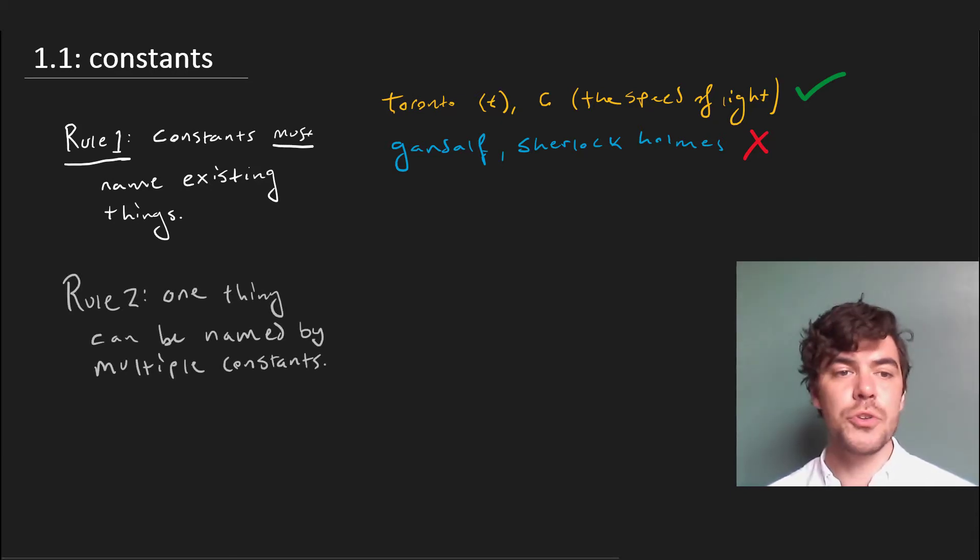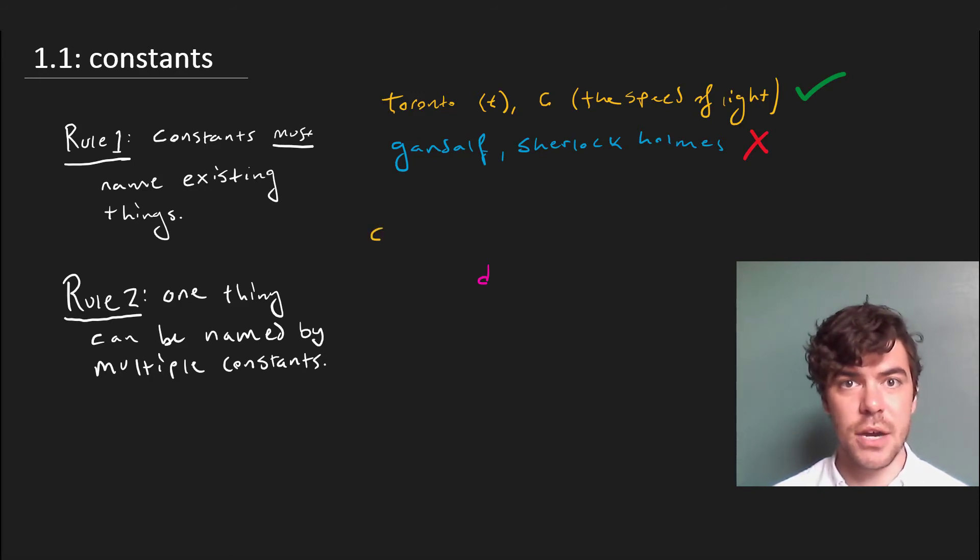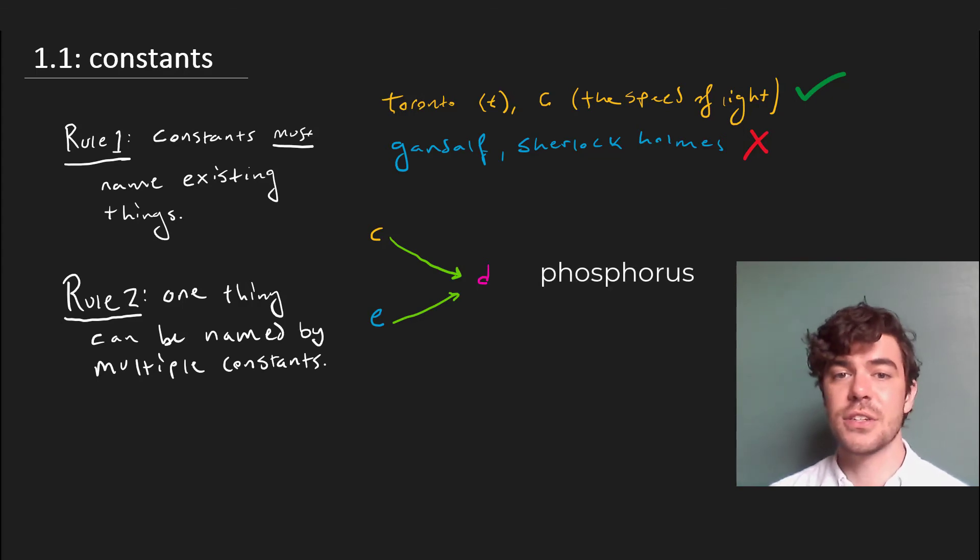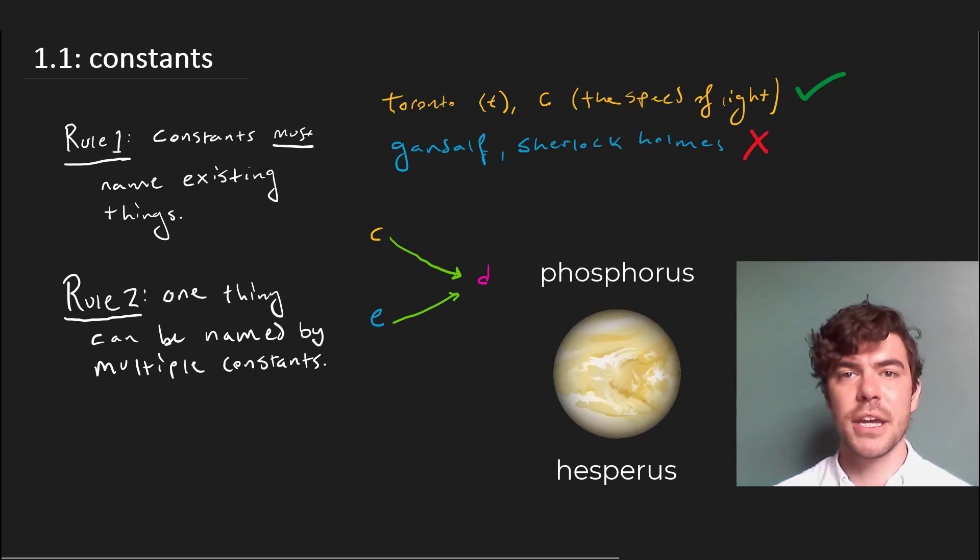On then to rule two. Rule two is that one thing can be named by multiple constants. So imagine we have one item here in the domain, an object D. It's perfectly fine to have a constant C which picks out D, and another E which also picks out D. If you want an intuitive example, you can think of Clark Kent being named by both Clark Kent and Superman. One of the classic examples from the literature is the morning star, or Phosphorus, and the evening star, or Hesperus, which both name the planet Venus. So that's perfectly okay.